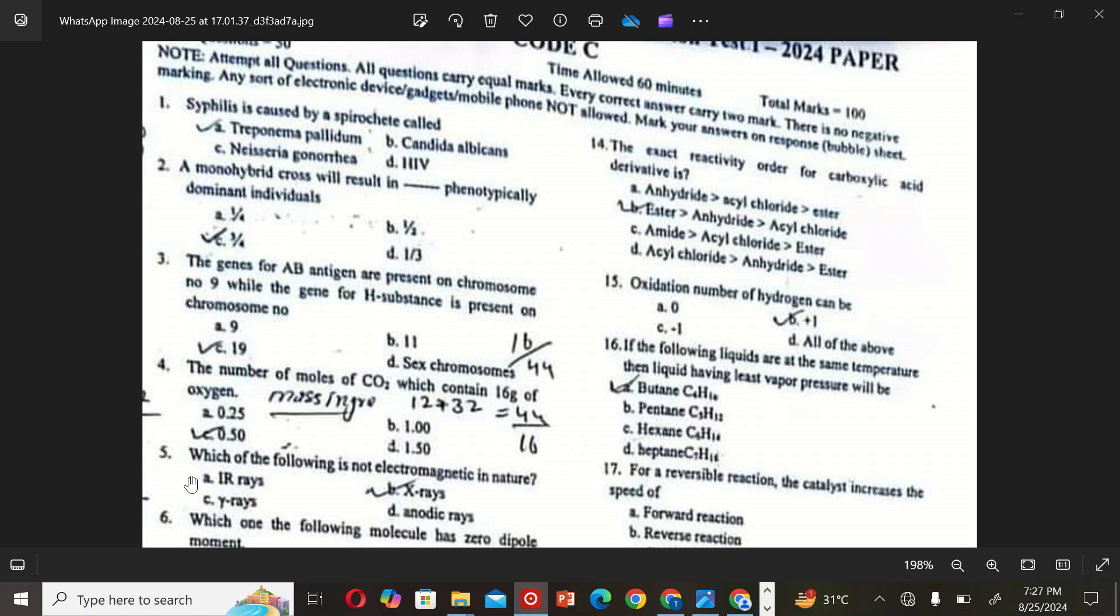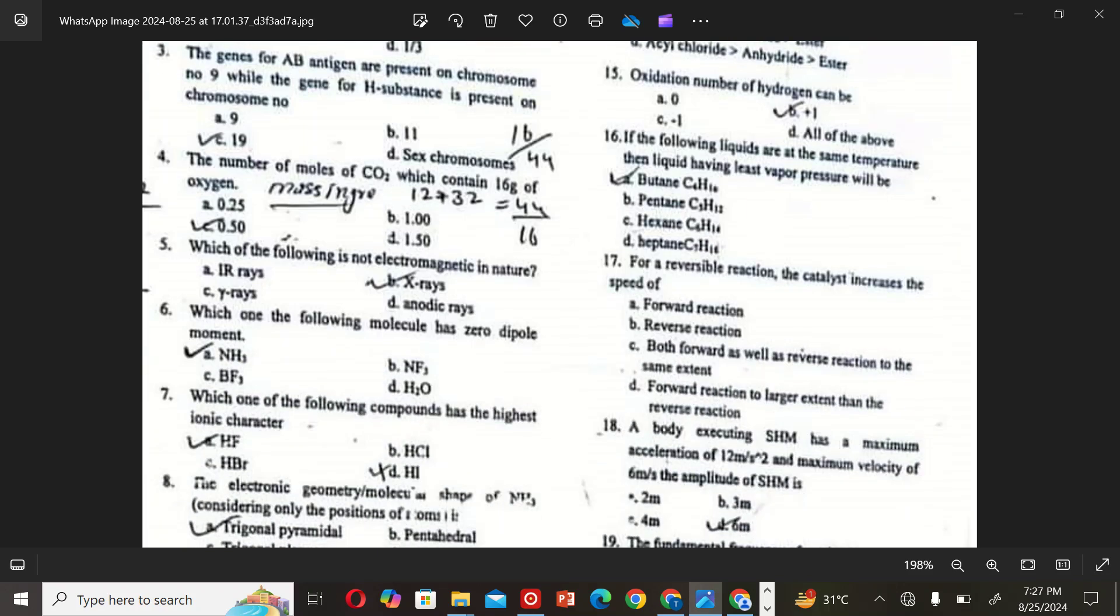The next MCQ is: Which of the following is not electromagnetic in nature? The next MCQ is: Which one of the following molecules has zero dipole moment? NH3. So the correct option is C.